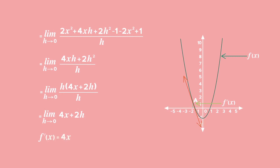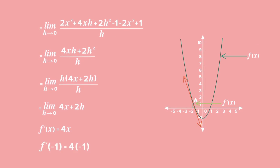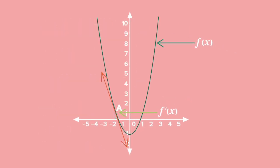By factoring out h in the numerator, the h's cancel to give the limit as h tends to 0 of 4x plus 2h. Substituting 0 for h gives f prime of x equals 4x. Now that we have the gradient function, we can determine the gradient at any point, including x equals negative 1 — we just substitute into the gradient function. The gradient at x equals negative 1 is 4 times negative 1, which equals negative 4. This is the same as the gradient of the tangent drawn to the curve at the point where x equals negative 1, point a on the graph. From first principles, we have shown the gradient to be negative 4 at the point where x equals negative 1.